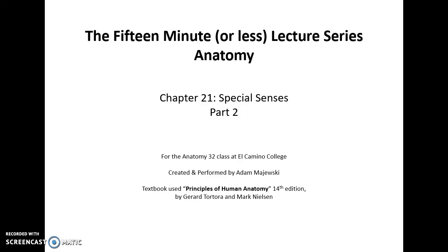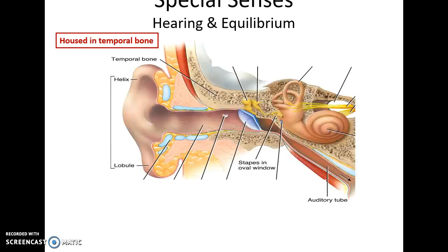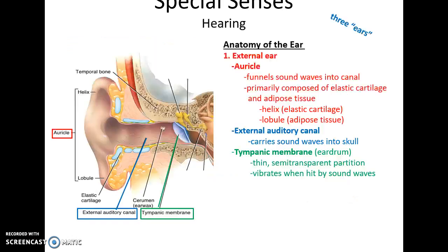15-minute or less lecture series, Human Anatomy, Chapter 21, Special Senses, Part 2. Moving on to hearing and equilibrium — there is a sense called equilibrium. Hearing and equilibrium, their detectors are housed within the temporal bone itself, the temporal bone of the skull. The ear is very critical for hearing and equilibrium.